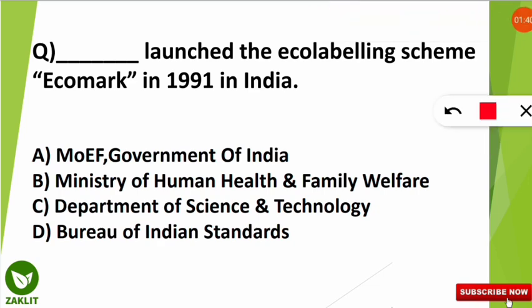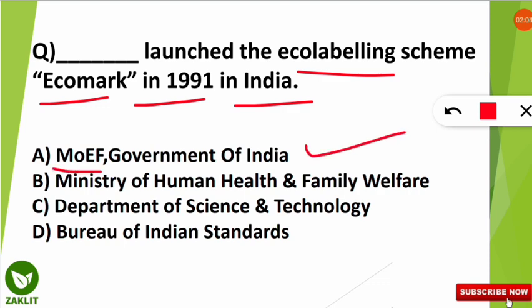The next question is a tricky one — you should be very attentive. The question is: which organization launched the eco-labeling scheme, that is Eco Mark, in 1991 in India? The correct option is the Ministry of Environment and Forest — now called the Ministry of Environment, Forest and Climate Change — of the Government of India, which launched this eco-labeling scheme called Eco Mark in 1991.